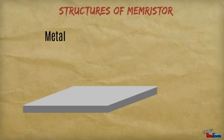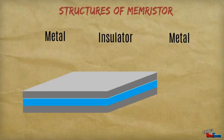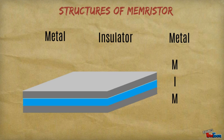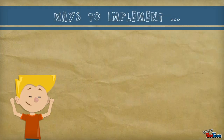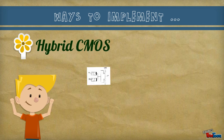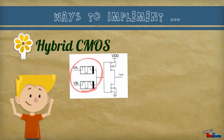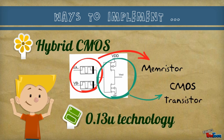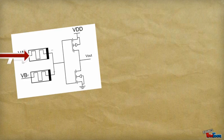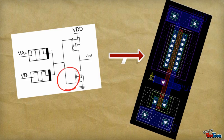It has the structure of metal-insulator-metal, or MIM, which is a lot more simple than the current conventional CMOS. There are many ways to implement memristor, and one of them is hybrid CMOS, which consists of both memristor and CMOS transistors. By using 0.13 micron technology in metal lithography, we are able to design the hybrid CMOS layout which includes a memristor.